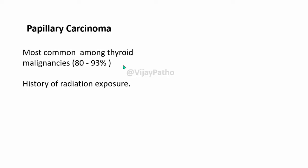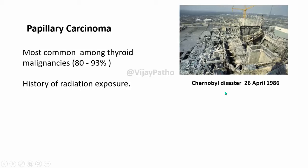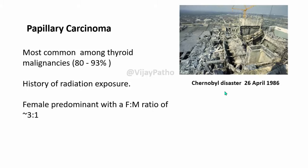History of radiation exposure is an important predisposing factor for the development of papillary thyroid carcinoma. One such example is the Chernobyl disaster which occurred on 26th of April 1986. Post exposure, many children developed papillary thyroid carcinoma. Like all other thyroid tumors, this is also a female predominant lesion where the gain of function mutation in BRAF is the most important molecular mechanism for its development.